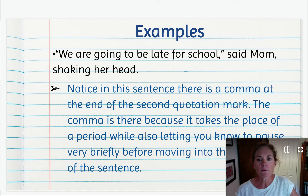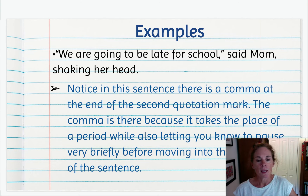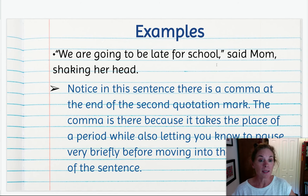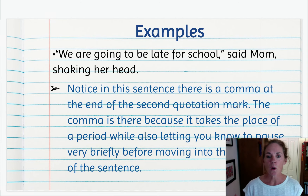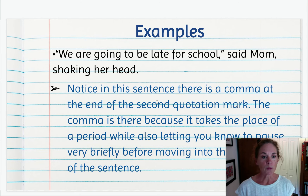"We are going to be late for school," said mom, shaking her head. Notice in this sentence there's a comma at the end of the second quotation mark. This is what mom is saying, and then there's a comma before "said mom, shaking her head." This comma is here because it takes the place of a period — it's letting the reader know to pause just a tiny bit before you say "said mom." So often we put a comma on the inside of our quotation marks like that.